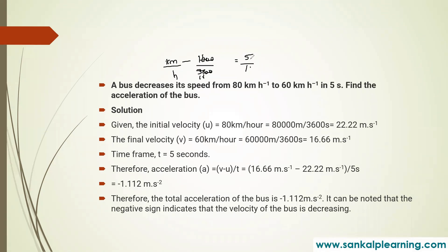The conversion factor is 5 divided by 18. So 80 kilometer per hour becomes 80 into 5 by 18, and 60 kilometer per hour becomes 60 into 5 divided by 18.